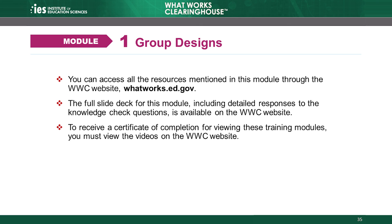This concludes our review of group designs, module 1 of the WWC's group design standards training. We discussed the two research designs eligible for review: randomized controlled trials and quasi-experimental designs. We also reviewed how to identify eligible RCTs with well-executed randomization, as well as how to identify eligible QEDs. Up next in the training series, we will discuss the WWC's attrition standard in module 2. You can access all resources through the WWC website at whatworks.ed.gov. The full slide deck for this module is available on the WWC website, including detailed responses to the knowledge check questions. To receive a certificate of completion, you must view the videos on the WWC website. Thank you for viewing the group designs module.